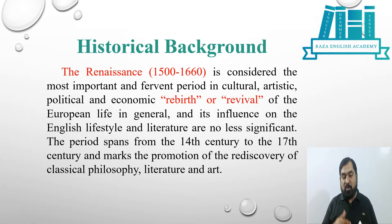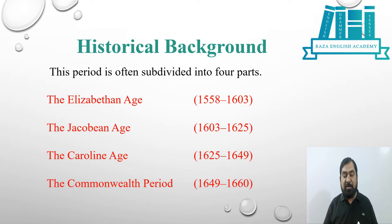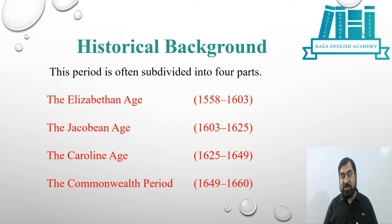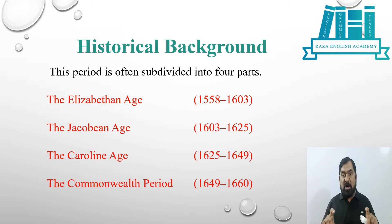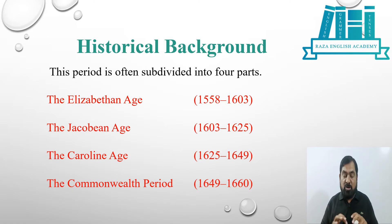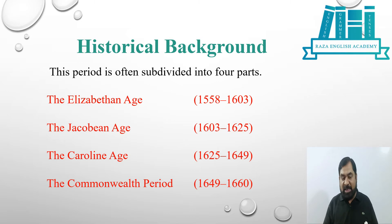This period is often subdivided into four parts. The first is the Elizabethan Age, which started in 1558 and continued to 1603. Then the Jacobean Age, which started in 1603 and continued till 1625. Then the Caroline Age, which started in 1625 and continued till 1649. And finally the Commonwealth Period, which started in 1649 and continued till 1660.